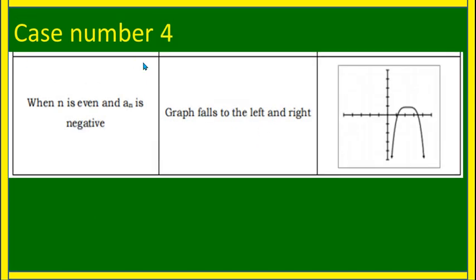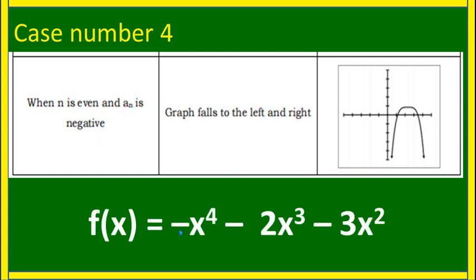Case number four: when n is even and a sub n is negative. Example: f(x) = −x⁴ − 2x³ − 3x². The degree is 4, which is even, and the leading coefficient is negative 1, which is negative. Therefore, the graph falls to the left and right.